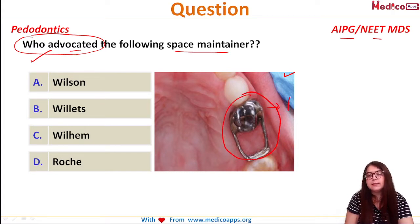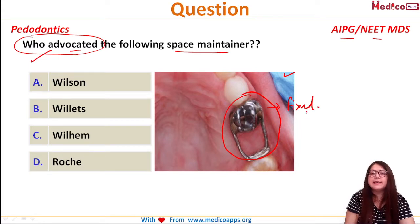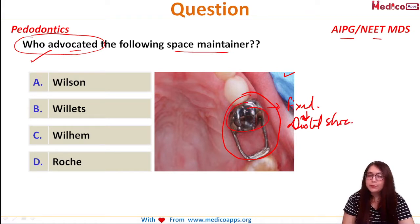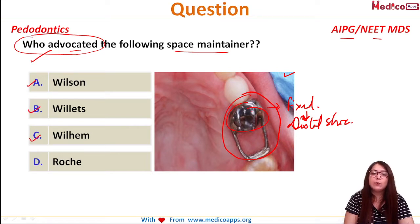First of all, this is a fixed space maintainer. Secondly, this is a distal shoe. This is the abutment. The options given were: A. Wilson, B. Willett, C. Wilhelm, and D. Brushfield.